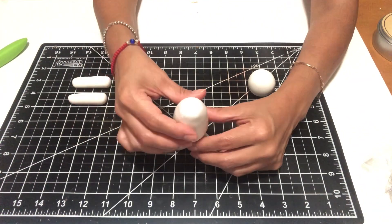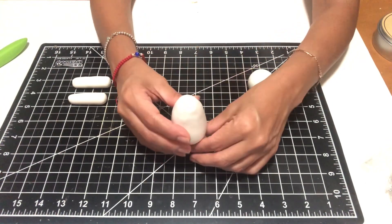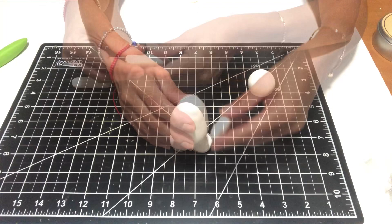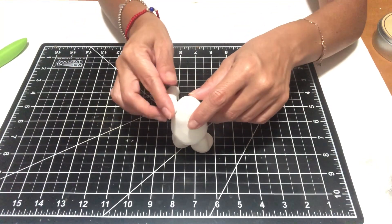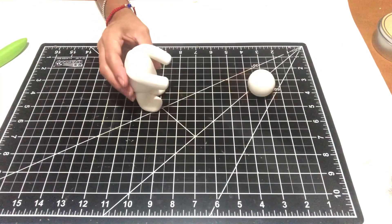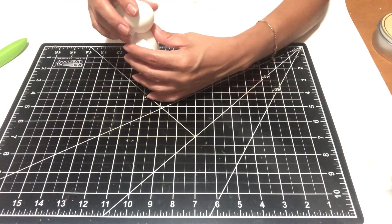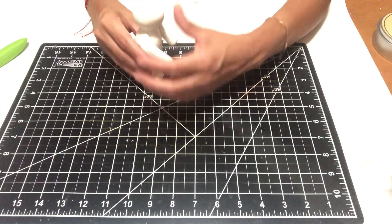I do recommend you let it sit and dry for a couple of hours. I personally let it dry overnight because I wanted to make sure that it was completely dry before I added his face, which I'll be using fabric paint for. And it was that easy to make this little snowman.